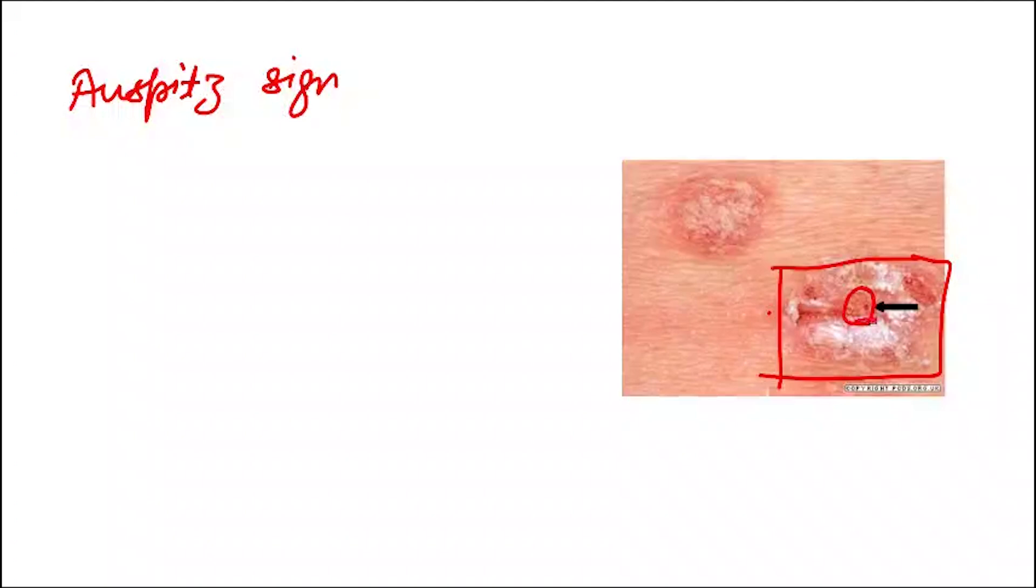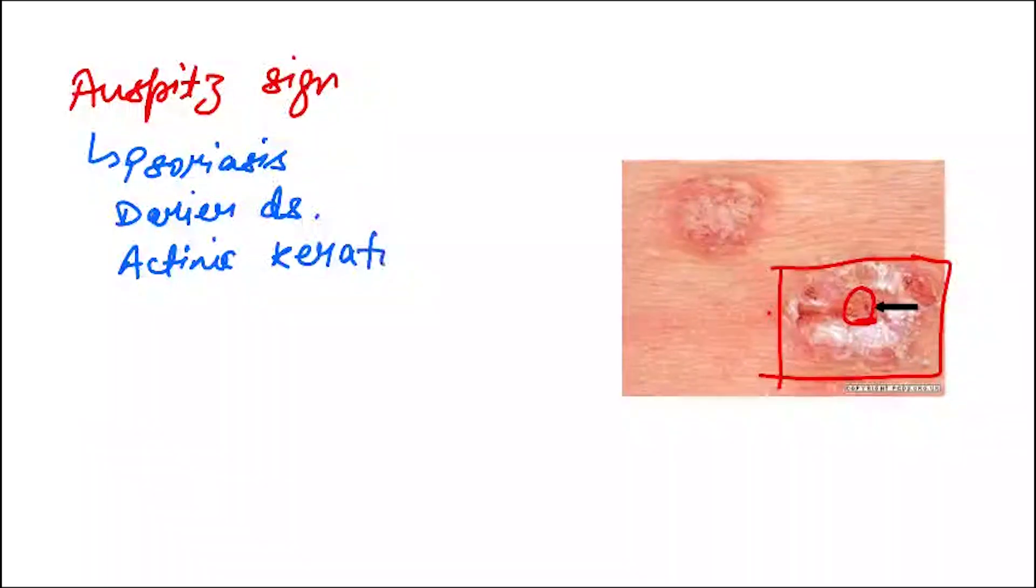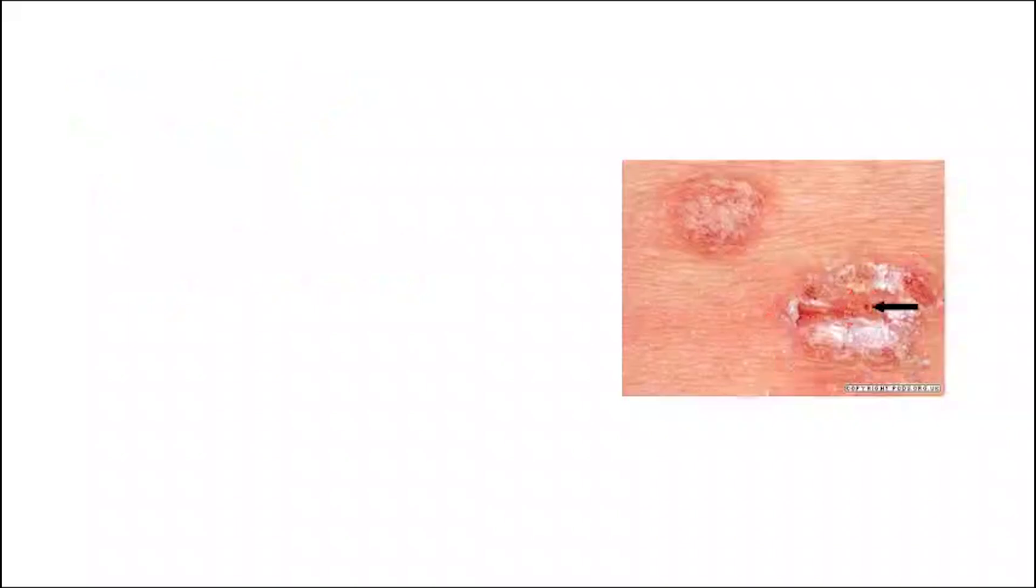I will tell you the causes. Auspitz sign is seen most importantly in psoriasis. Other reasons being Darier disease and actinic keratosis. To revise, Auspitz sign is seen in psoriasis, Darier disease, and actinic keratosis.